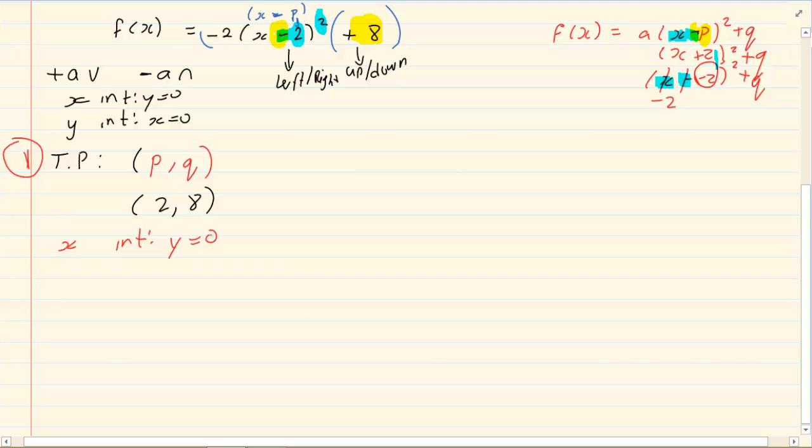What does x intercept mean? It means y is equal to 0. So I am going to have 0 is equal to minus 2 times (x minus 2) all squared plus 8. If I bring the 8 over, I've got minus 8 is equal to minus 2 times (x minus 2) all squared, divided by negative 2. So I have (x minus 2) all squared is equal to 4.